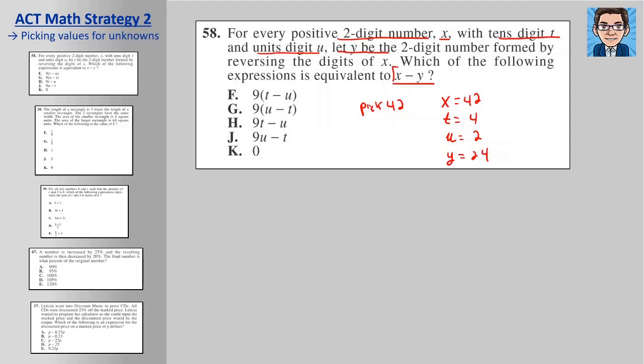And then we're trying to find X minus Y. So X minus Y is going to be 42 minus 24 or 18. So we have to find out which one of these with these variables gets us 18. So let's put it into the first one, 9 times T minus U is going to be 2, and we found it right away. That one's 18.